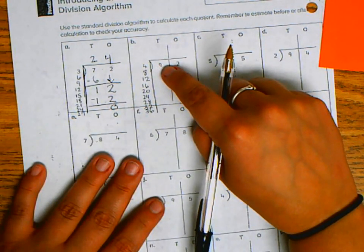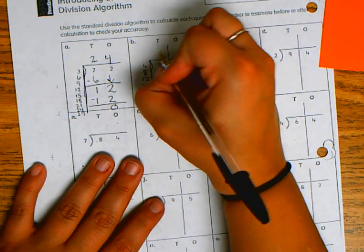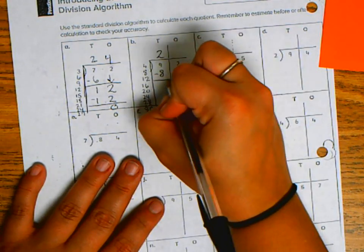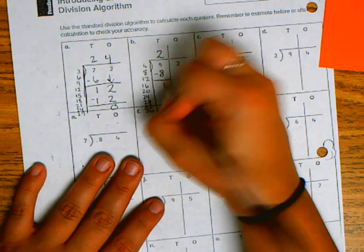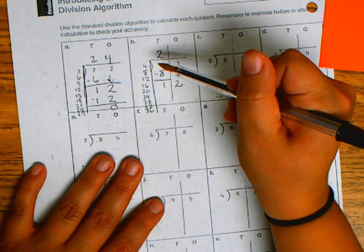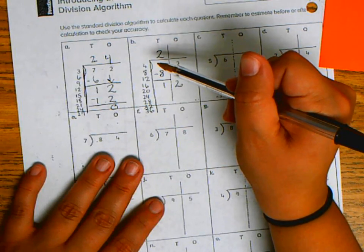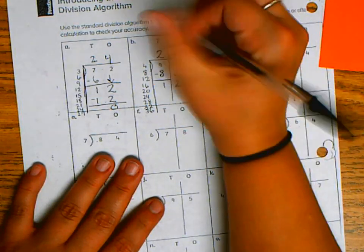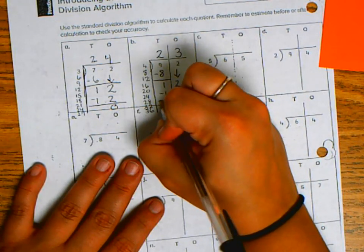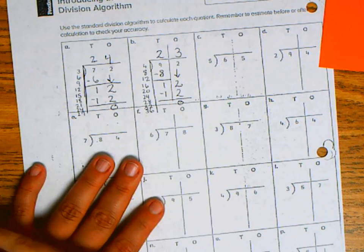So how many groups of 4 can go into 9? Well, that's 2 groups. And I'm going to subtract 8. 9 minus 8 is 1. Bring down the 2. And then I bring it back. So then how many groups of 4 can I take out of that 12? Well, that's 3. So I multiplied by 3. So 4 times 3 was 12. 12 minus 12 is 0. I hope that you find this helpful.